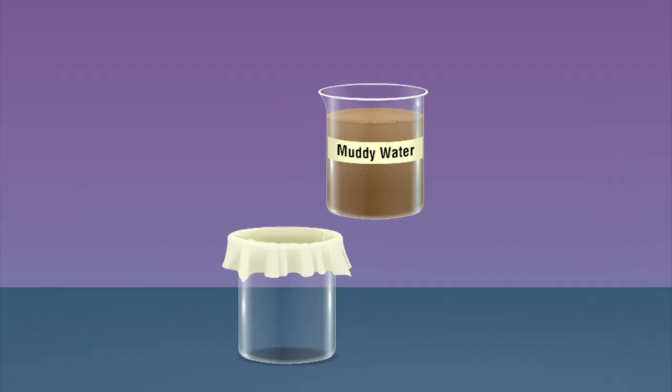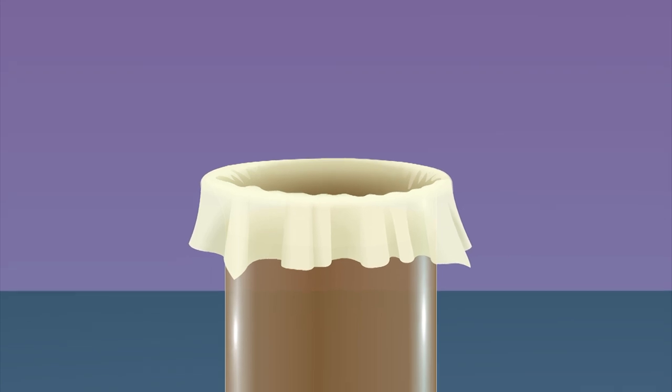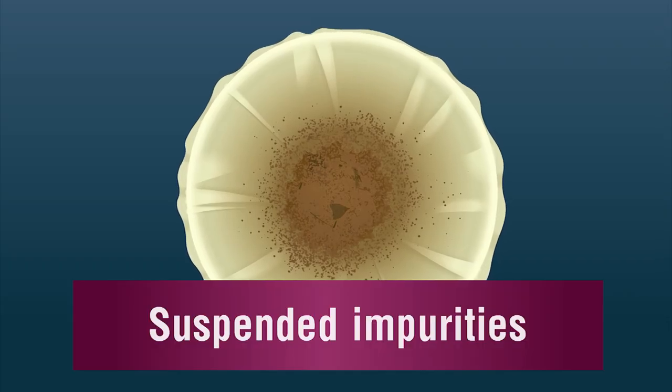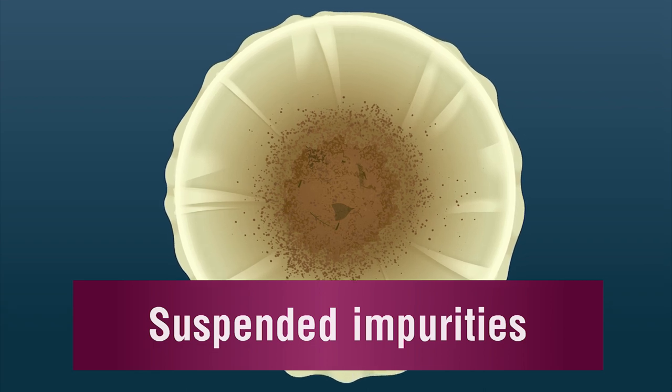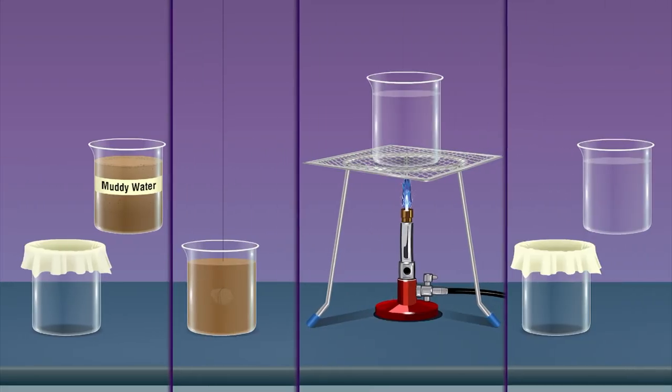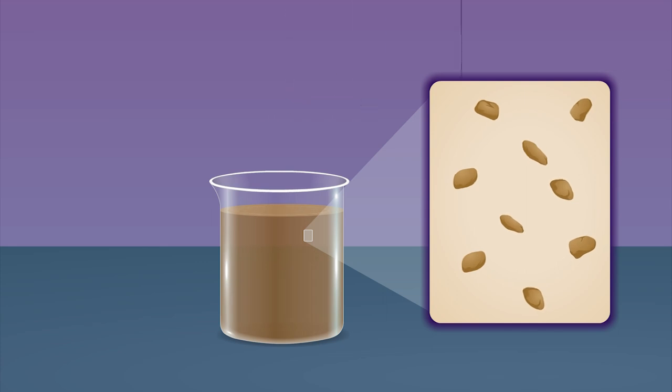The muddy water contains suspended solids, chemicals, and germs in it. Suspended impurities of muddy water are separated by filtration. On leaving the water undisturbed after swirling with alum, the fine mud particles are settled down due to the chemical nature of alum.